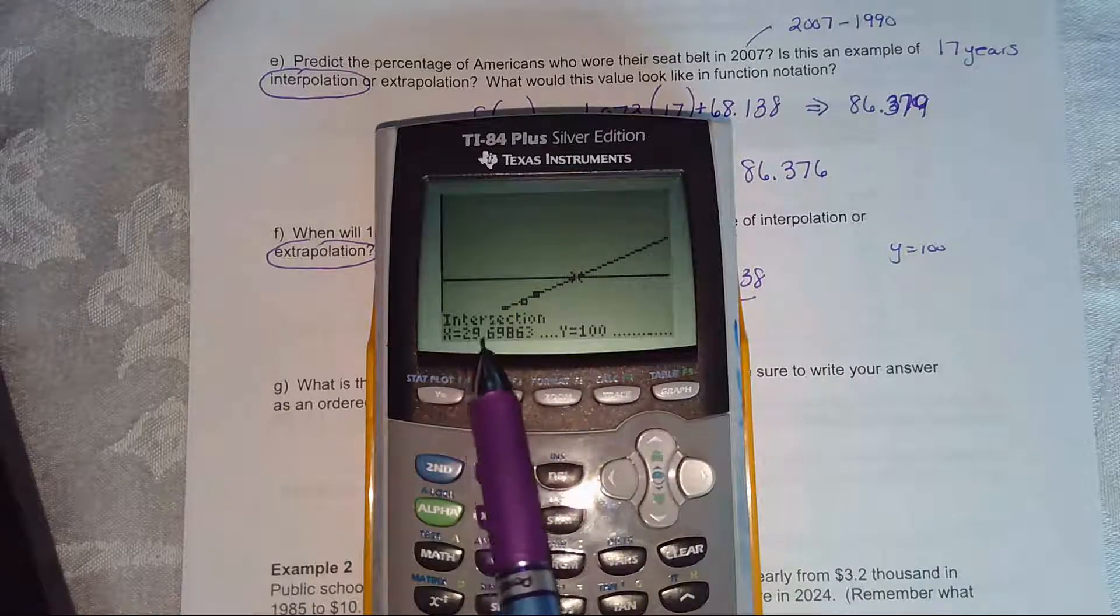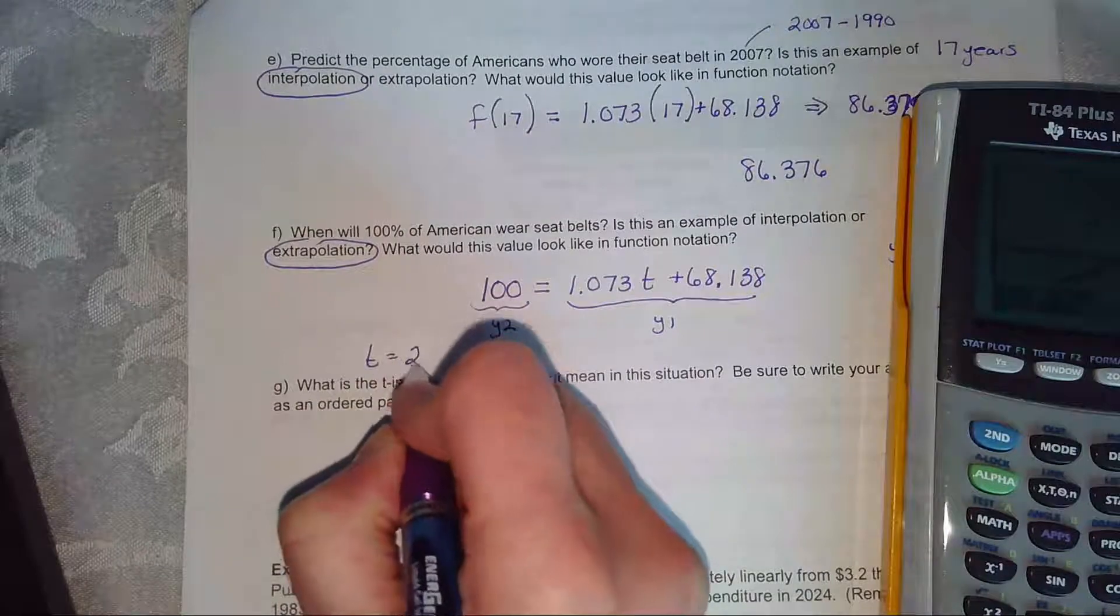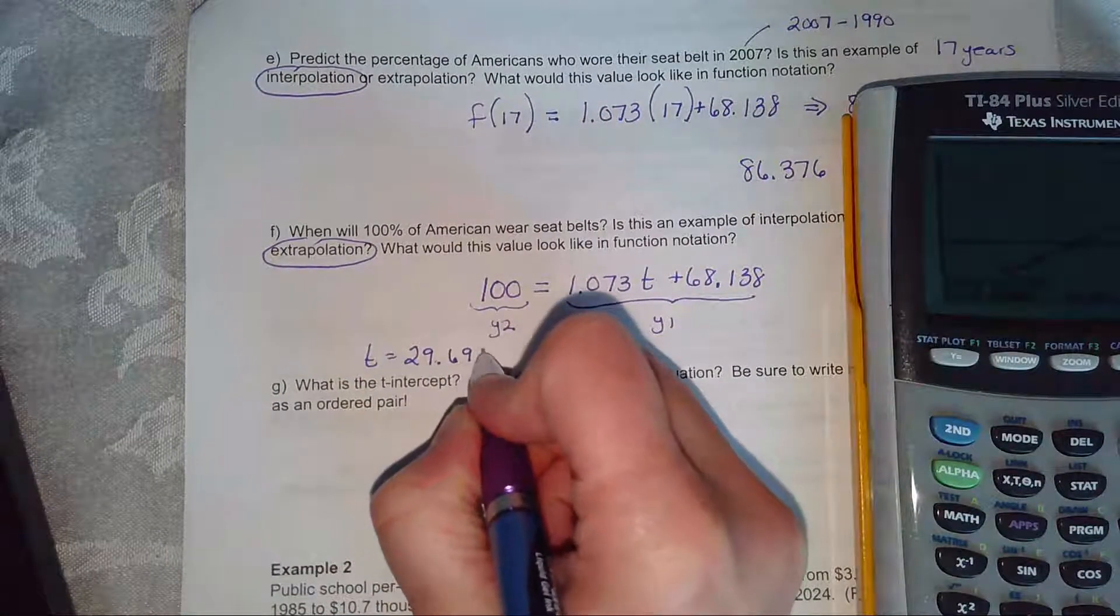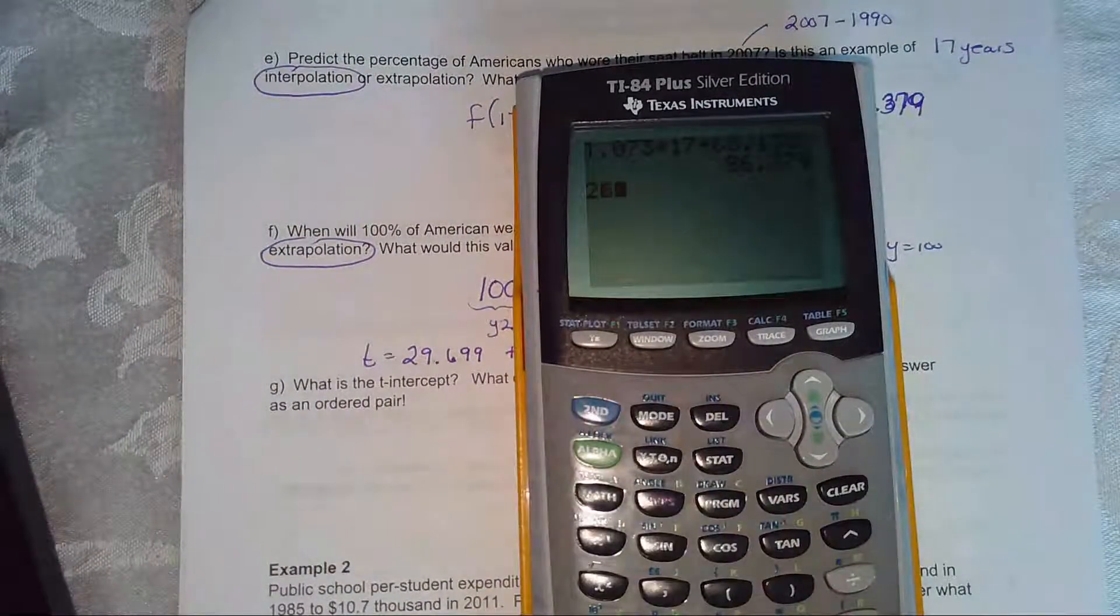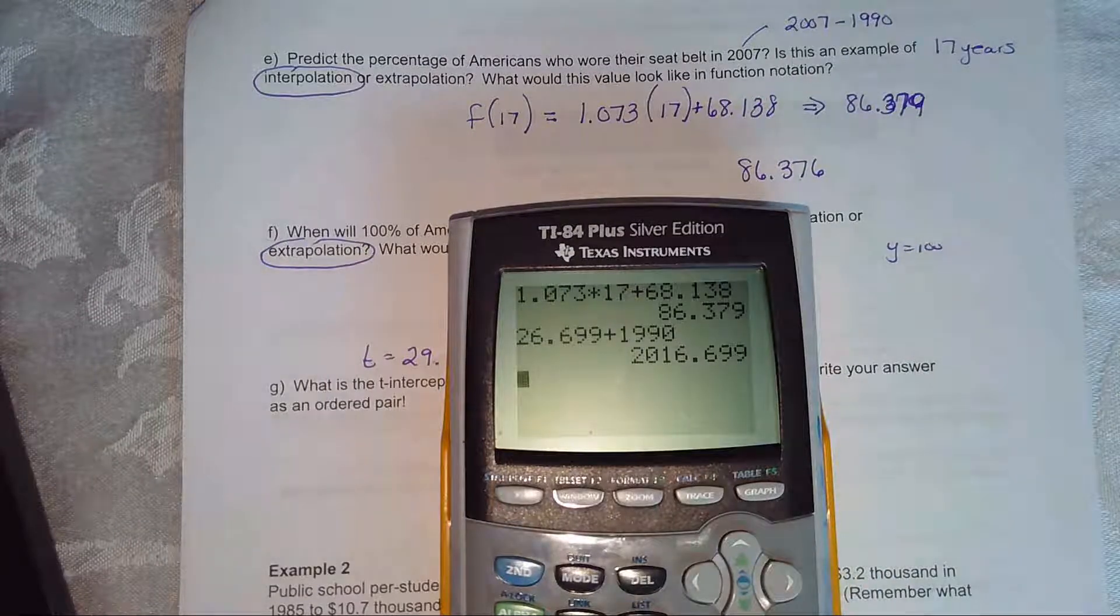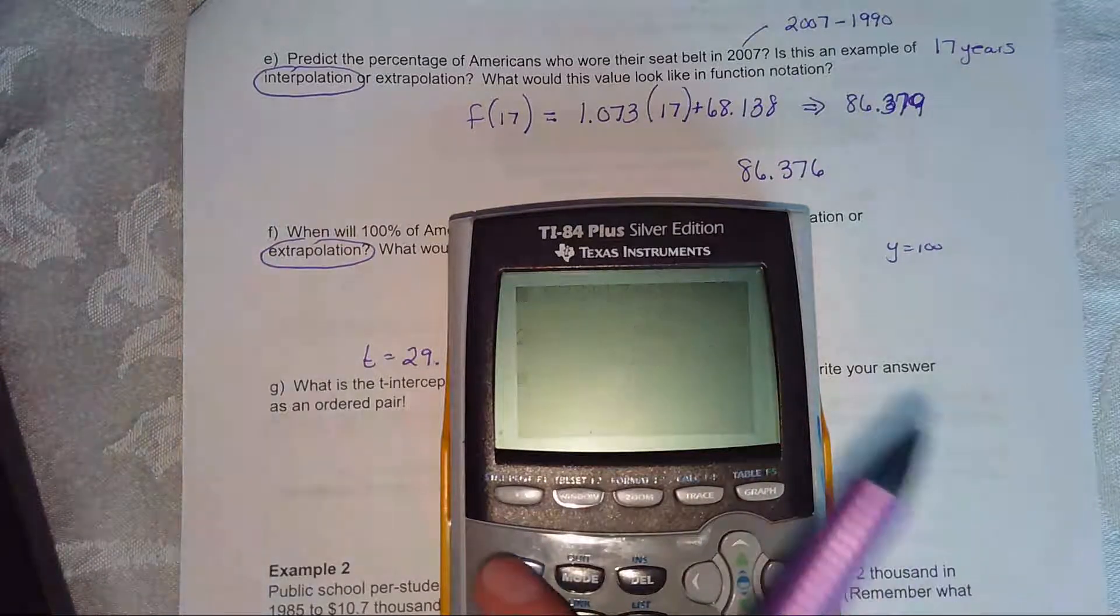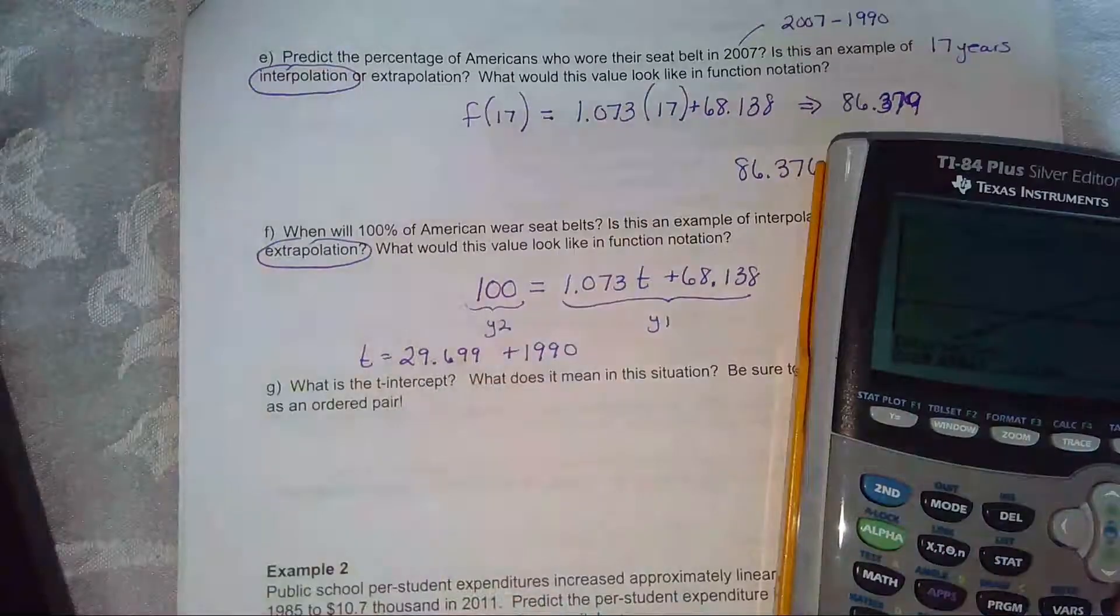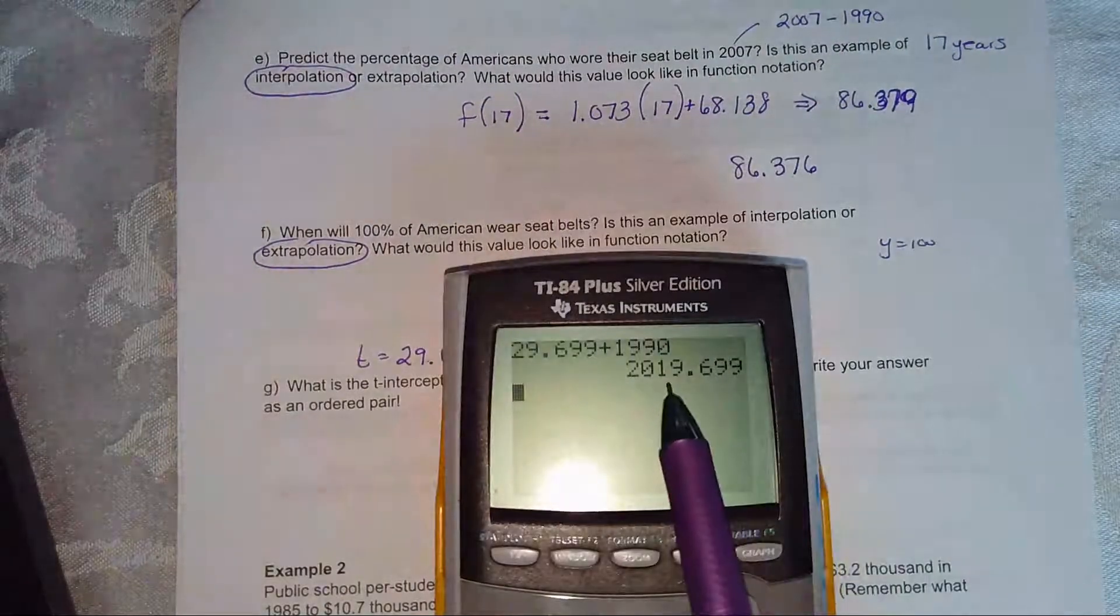Now, they always ask us to round to the closest year. So the closest year would, let's write this down. So t is 29.698. So when you add that to 1990, it's pretty obvious that the year you're going to have to round. So 29.699 plus 1990. I knew the answer was 2020. So when we round that, we get 2020. So according to the model in the year 2020, everyone wore a seat belt.